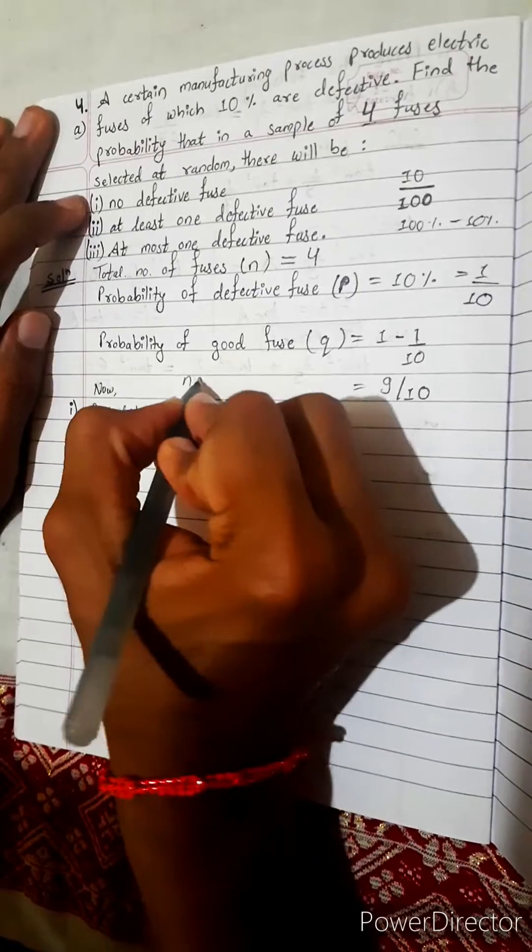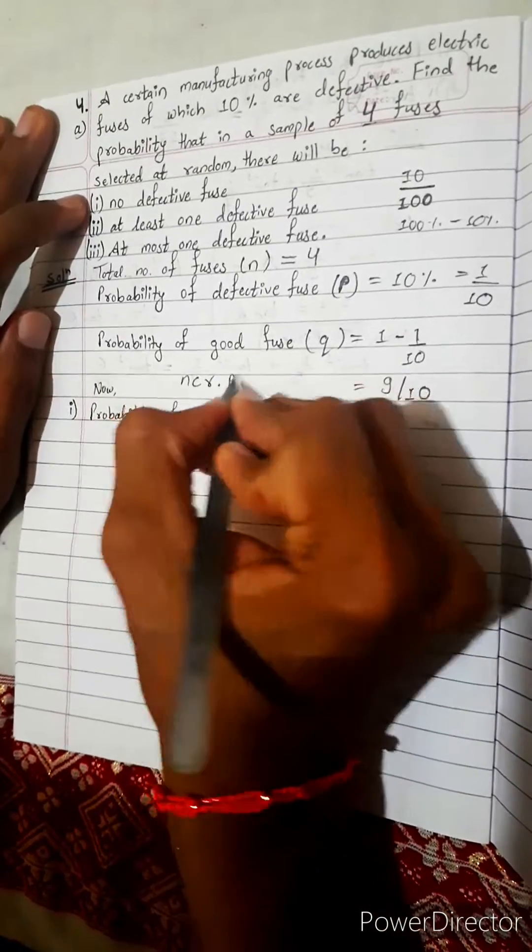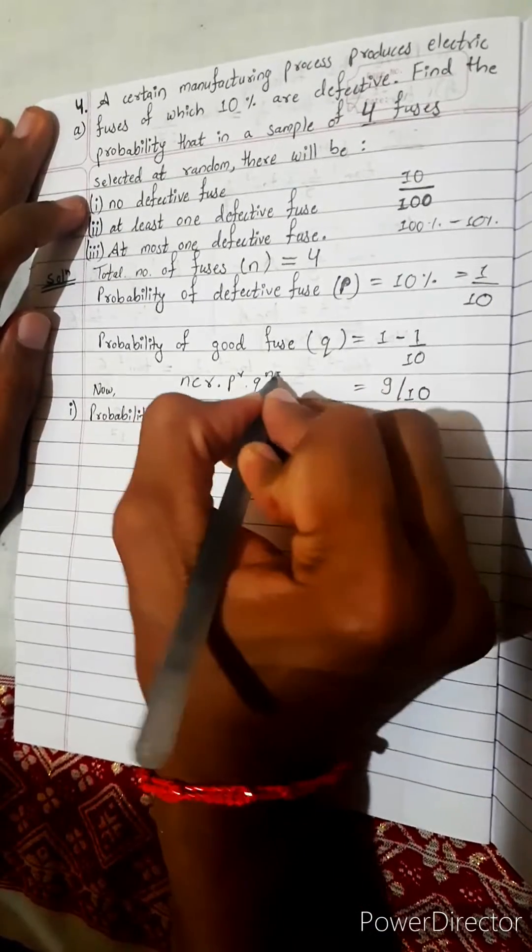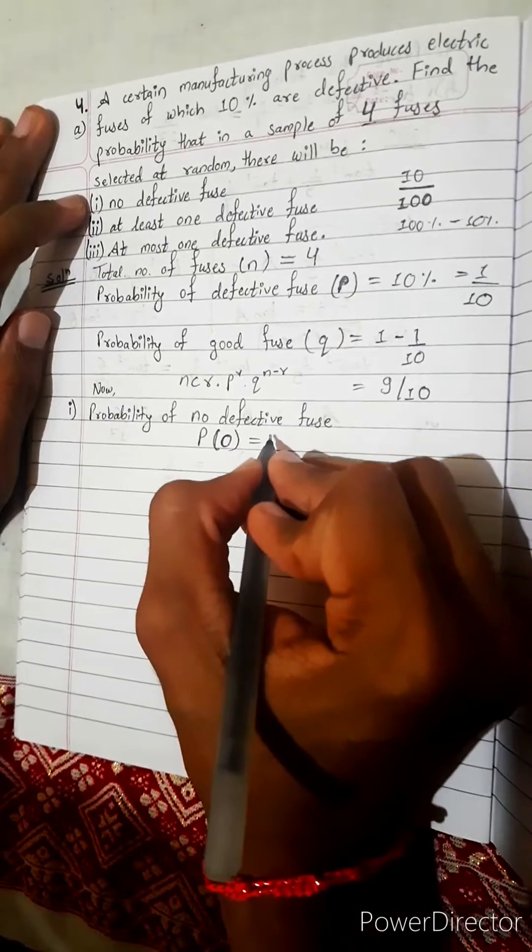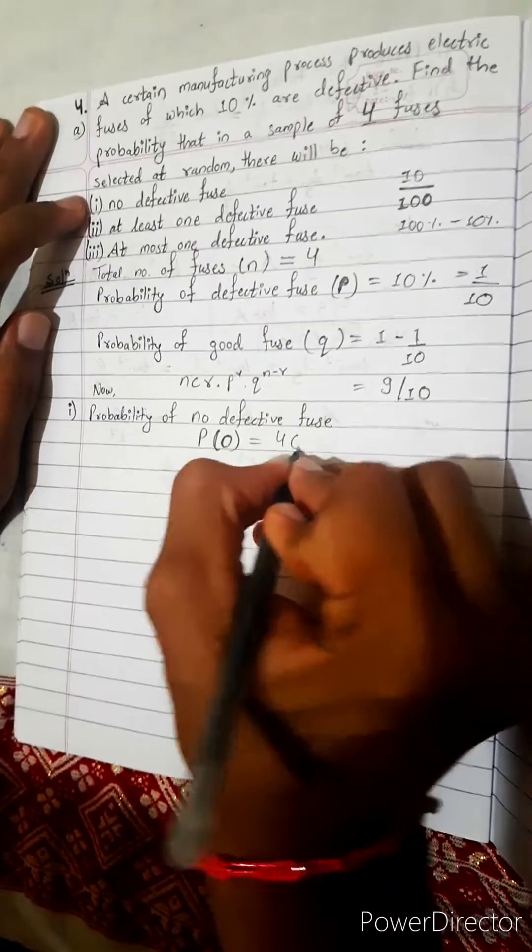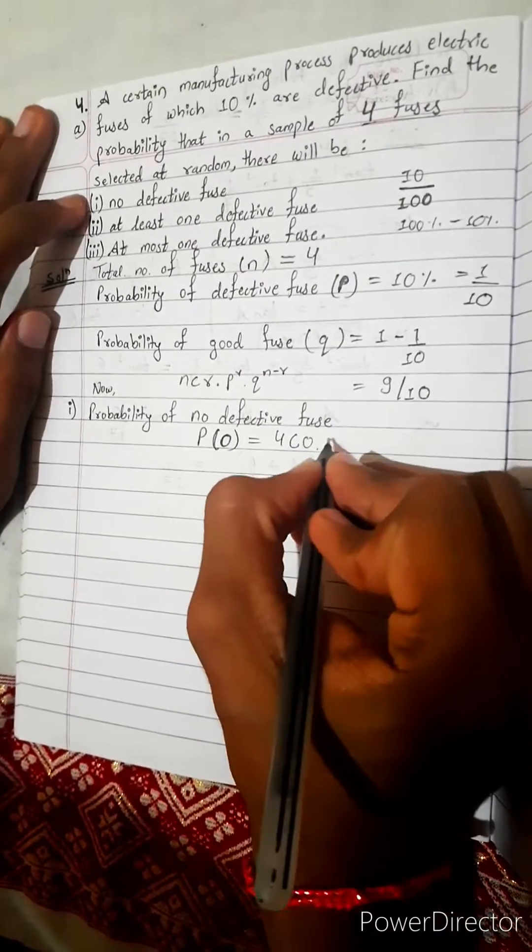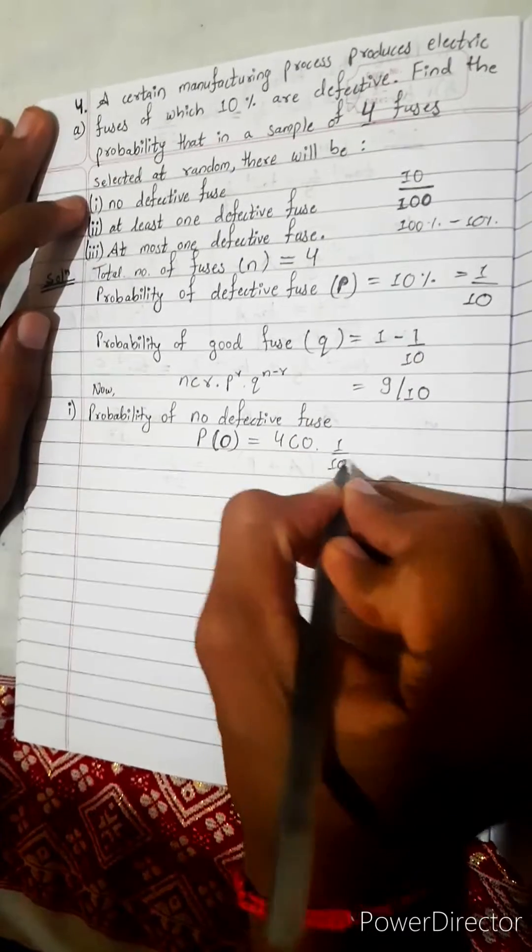Its formula is nCr multiplied with p^r and q^(n minus r). This formula everybody knows. n means 4, r means 0, p means 1 by 10.